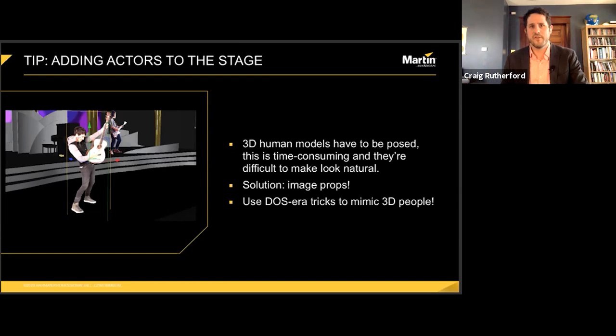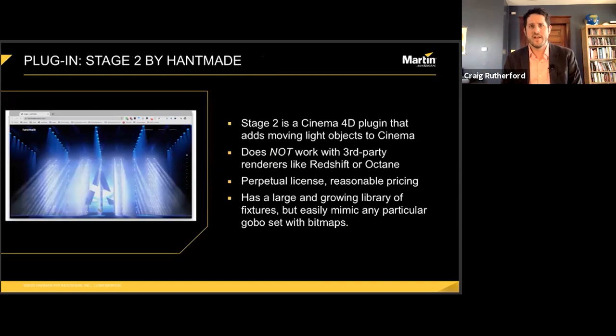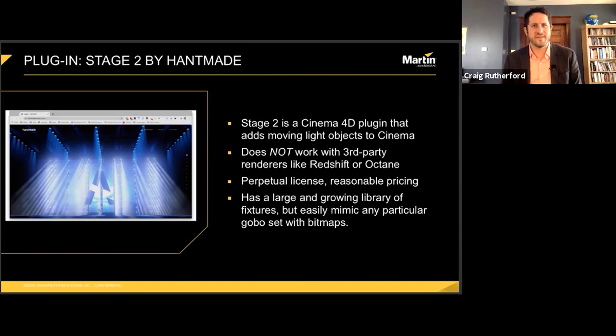For MVR import and all of my renders, I use the Stage 2 plugin from Handmade, which I think is really excellent. Stage is a plugin that adds a library of lighting fixtures that can be controlled from a basic control interface from within Cinema. There's no way I'm aware of to get real DMX data into Stage because internally the fixtures aren't built like real fixture personalities. There are internal ways of doing things like saving cues and playback. Cinema isn't really intended to be a visualizer, though it would be interesting to see if you could use it as one with optimized hardware.